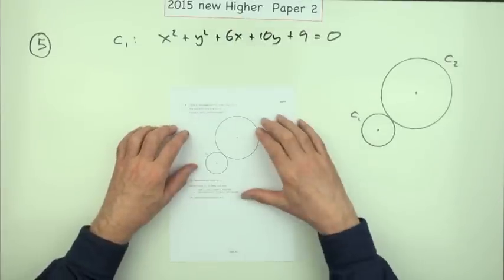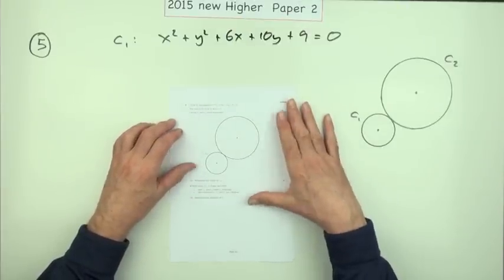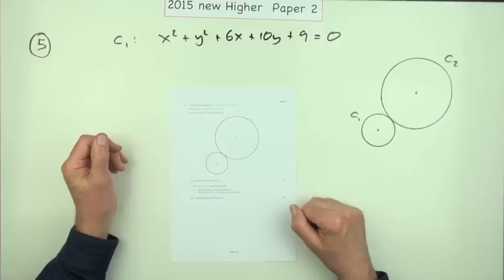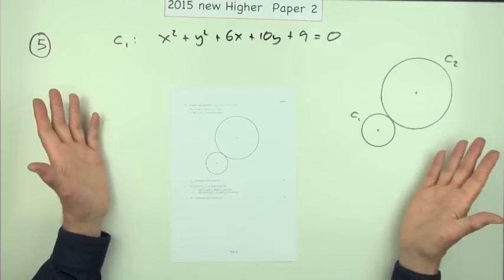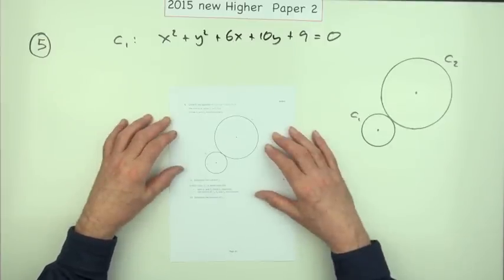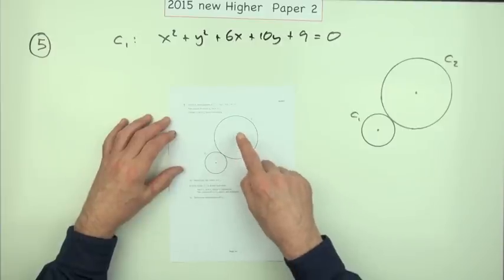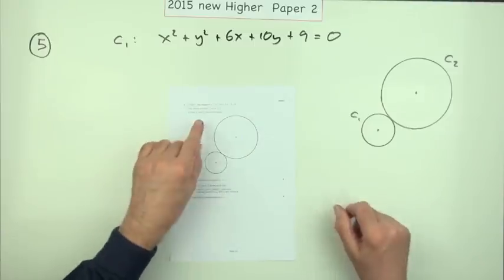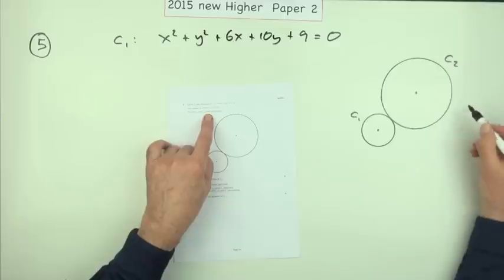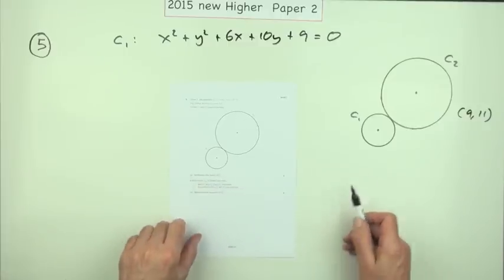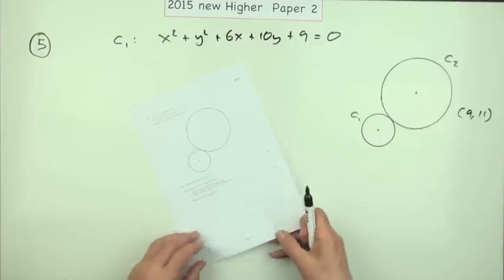Question five from paper two of the 2015 new higher, a circles question for eight marks. Quite a nice little circles question, similar to plenty that you should have practiced beforehand. It gives you the equation of the first circle in that expanded form, gives you the center of this second circle at 9, 11, and for part a for four marks it says what's the radius of this larger circle c2.